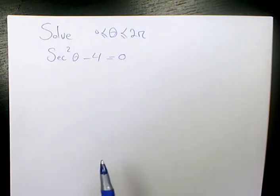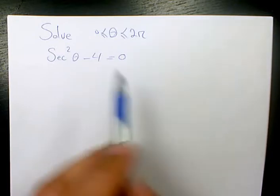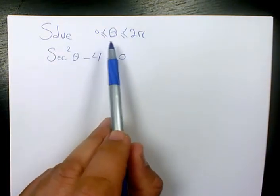In this video I want to solve this trigonometric equation which is secant squared theta minus 4 equals to 0, and we need to solve it when theta is between 0 and 2 pi.